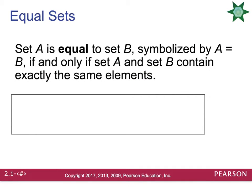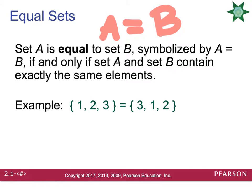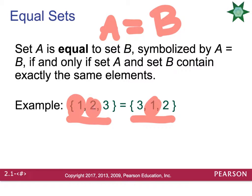Another term is what's called equal sets. In order for two sets to be equal, they have to contain the exact same elements, and we write that as Set A equals Set B with a normal equal sign between them. For example, the set {1, 2, 3} and the set {3, 1, 2} — notice all the elements are the same. Both sets contain a 1, both contain a 2, and both contain a 3. They're in a different order, but they contain the exact same elements, so those two sets would be considered equal.